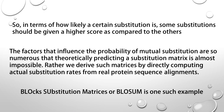BLOSUM substitution matrices are one such example. These are the fundamental assumptions of BLOSUM matrix derivation. First, BLOSUM matrices are not based on any explicit evolutionary model. They are derived considering all amino acid changes observed in an aligned region of a related family of proteins, regardless of the overall degree of sequence similarity. Though proteins in each family share a common origin, closer versus distal relationships are ignored, as if they were all derived equally from the same ancestor. This is called a starburst model of protein evolution.